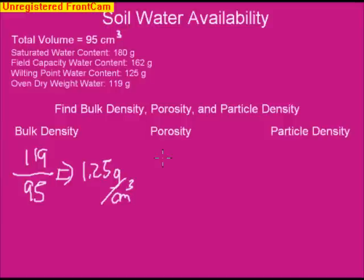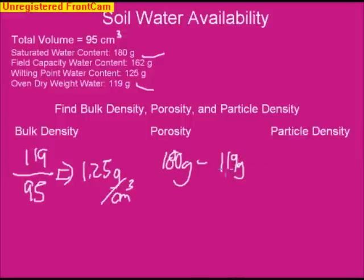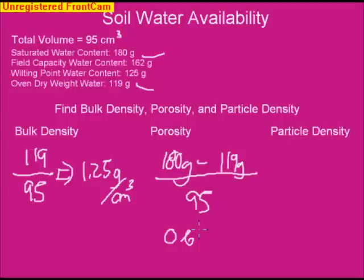In this case, the volume of the pores is 180 grams — the saturated water content — minus the oven dry weight of 119 grams, because all of that water fills the pores between saturated and oven dry. Dividing by the total volume of 95 gives us a porosity of 0.64.